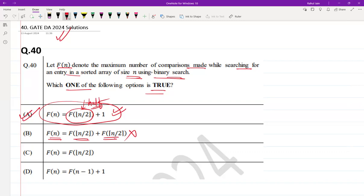In option C, if you will see, then this option is going to neglect the comparison made at every step. So that is why it is wrong.